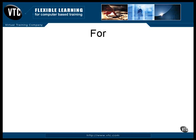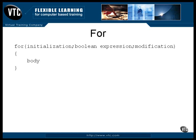The for loop is the workhorse of the loops. It's the one that's used the most often, and that's probably because it's the most flexible. Here's its structure. To create a for loop, you need to specify the initialization, the Boolean expression, the modification code, and the body of the loop.